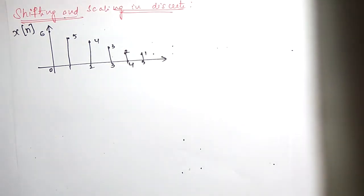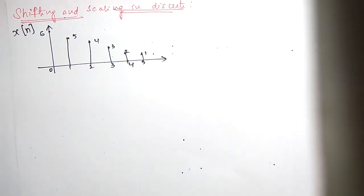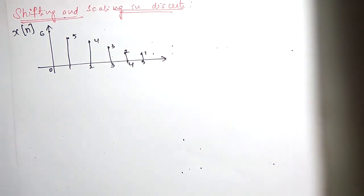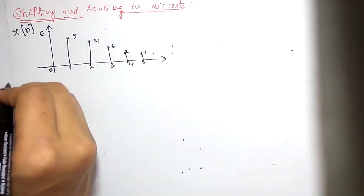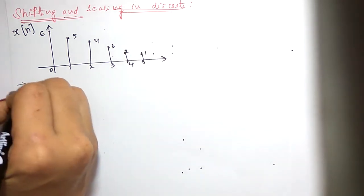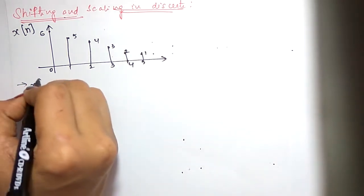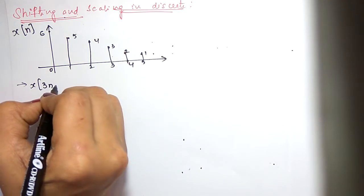Hi students, welcome to the next session. In this session we are going to see shifting and scaling in discrete. So far we have discussed separately how to do shifting and separately how to do scaling. Now we can do them combinedly. For example, this is the given sample — I am taking the same sample in all the sessions — so suppose if you want to get x of 3n plus 4.